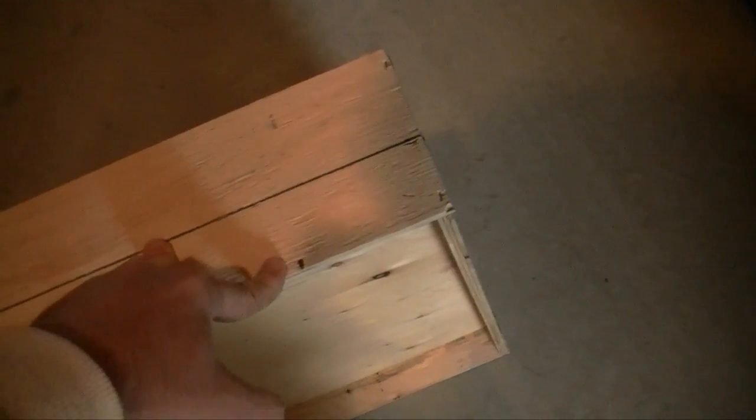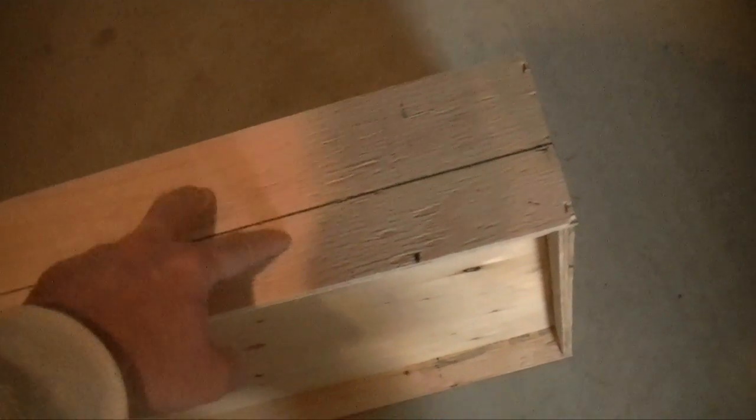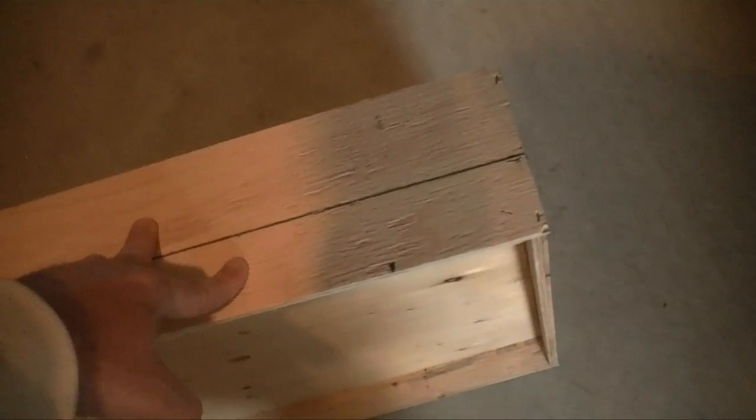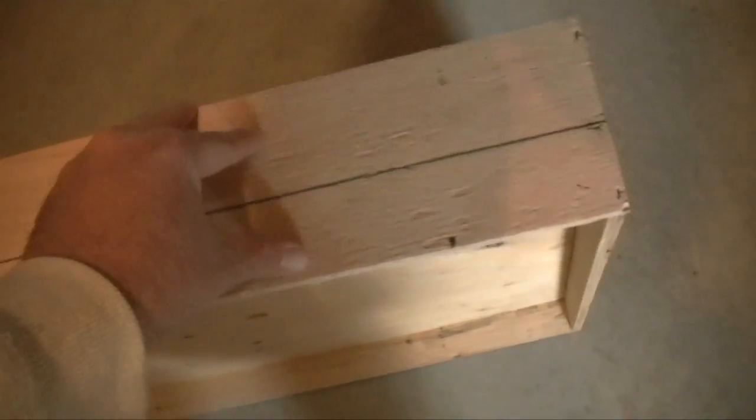What I will do is what I did with my other light - cover this in drywall putty, sand it down, paint it with a primer, paint it with a water-safe paint like a kitchen and bath ceiling type thing so it will be sealed. Inside I'll probably do white as usual just because it reflects light - any bit of reflection is good.